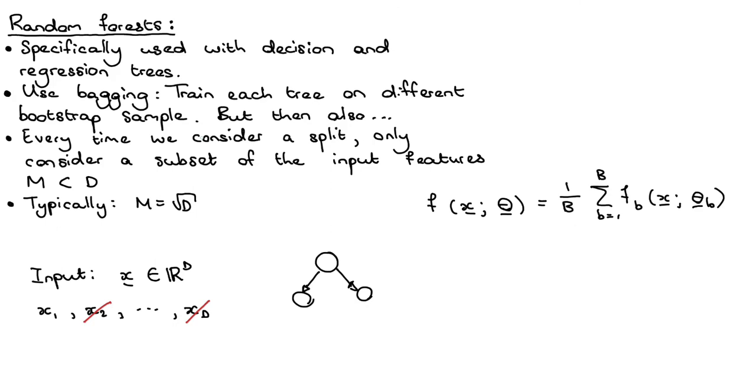So the second tree I will again grab a different bootstrap sample and I will grow that tree. Each time when I need to make a decision about a specific node, I only consider m of the d possible features.